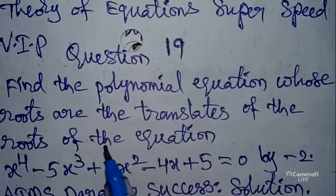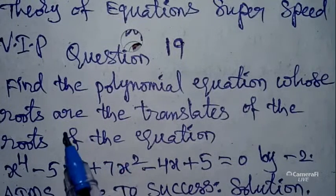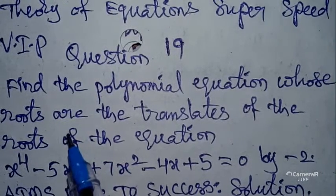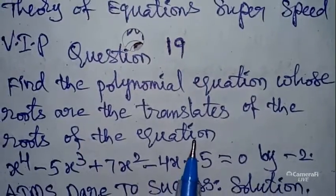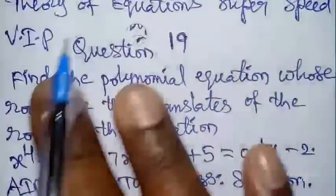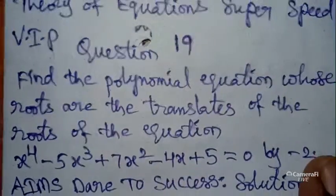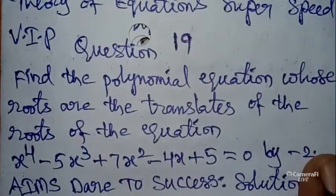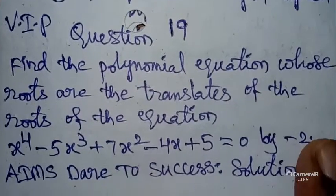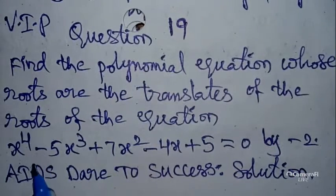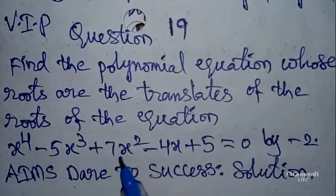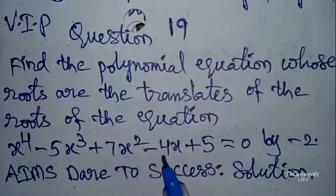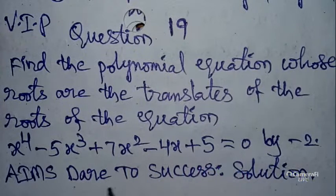Today our question is: find the polynomial equation whose roots are the translates of the roots of x⁴ - 5x³ + 7x² - 4x + 5 = 0, translated by -2.